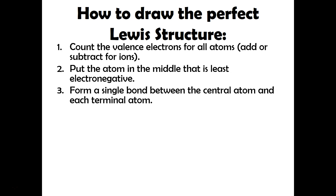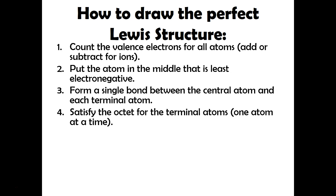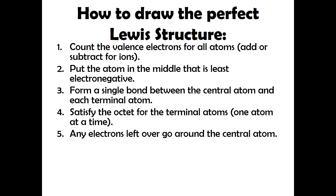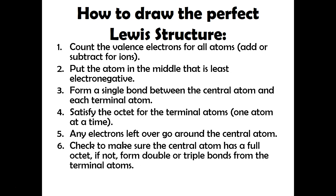The third step is where you'll take a single bond and form it between the central atom and each terminal atom — the atoms on the outside. Then you'll have to add the electrons in to satisfy the octets for the terminal atoms, one atom at a time. Any electrons that are left over must go around the central atom.